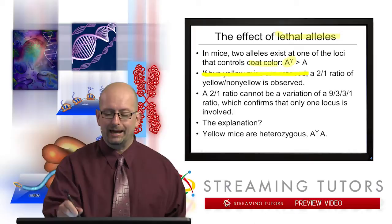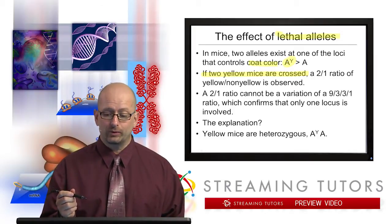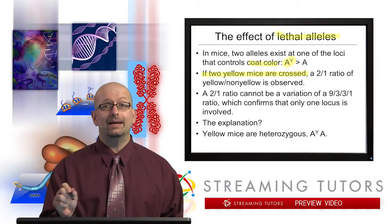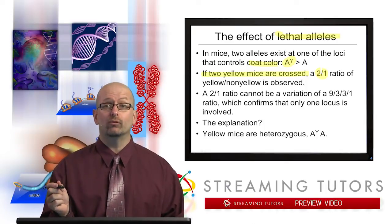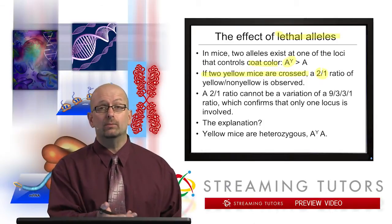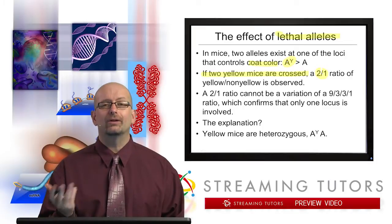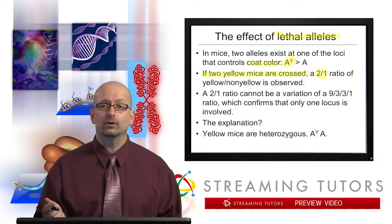they took two yellow mice—every time, no matter what—two yellow mice crossed together, what you see is a strange 2:1 ratio of yellow to non-yellow. It turns out that the non-yellow is agouti colored.